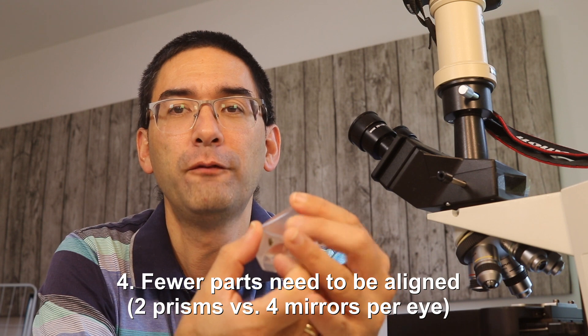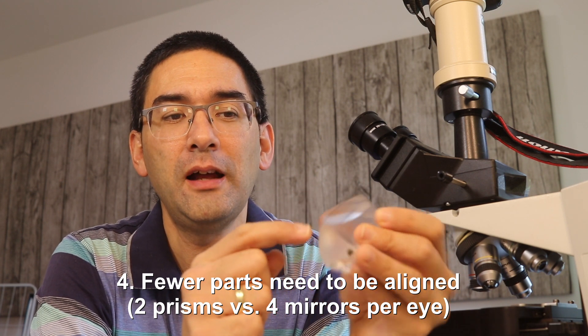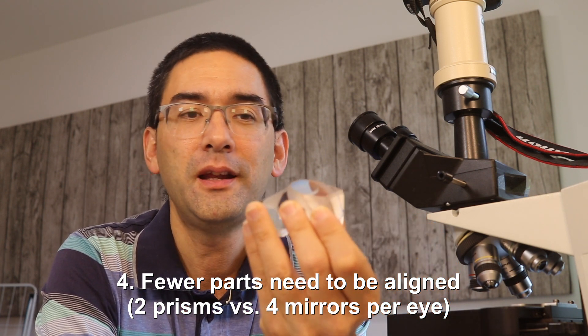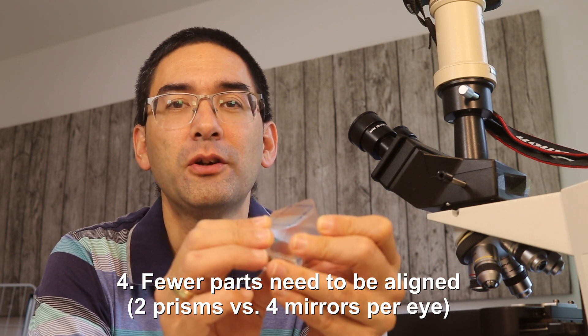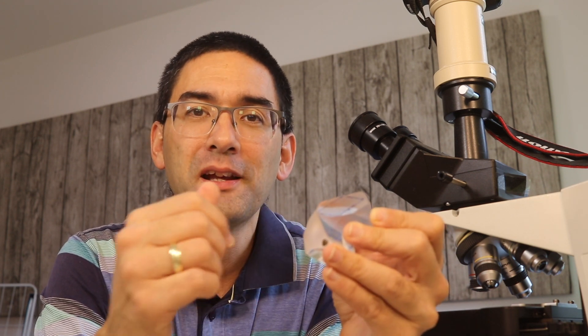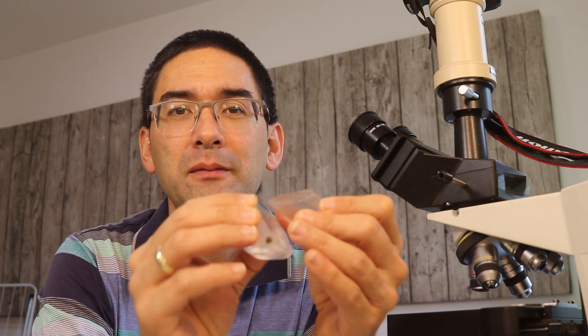This is also yet another reason and that is the alignment of the mirrors because when you have those prisms here and they're aligned like this, you need actually four small mirrors and they all have to be properly aligned. And this is already something that has to be done very carefully and if you bump against the microscope and the mirrors kind of slip out of alignment, then you don't get a good picture anymore because you see double.